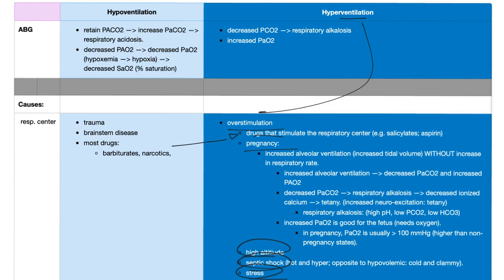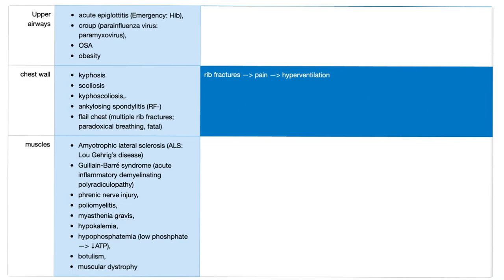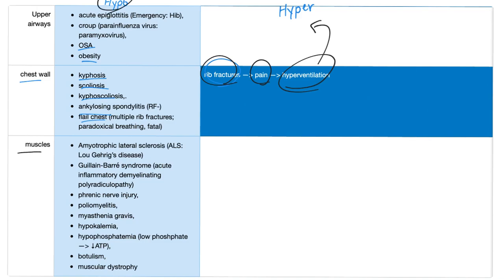I've talked about all of this in detail in my video called Ventilation, Hypoventilation, and Hyperventilation. Upper airway causes of hypoventilation include acute epiglottitis, croup, obstructive sleep apnea, and obesity. Chest wall problems leading to hypoventilation include kyphosis, scoliosis, kyphoscoliosis, ankylosing spondylitis, and flail chest — which is fatal. Causes of hyperventilation from the chest wall: rib fractures cause pain, leading to hyperventilation, washing out CO2, and respiratory alkalosis. Muscle problems leading to hypoventilation include ALS, Guillain-Barré syndrome, phrenic nerve injury, poliomyelitis (lower motor neuron), myasthenia gravis, hypokalemia, hypophosphatemia, botulism, muscular dystrophy, and Lambert-Eaton myasthenic syndrome.